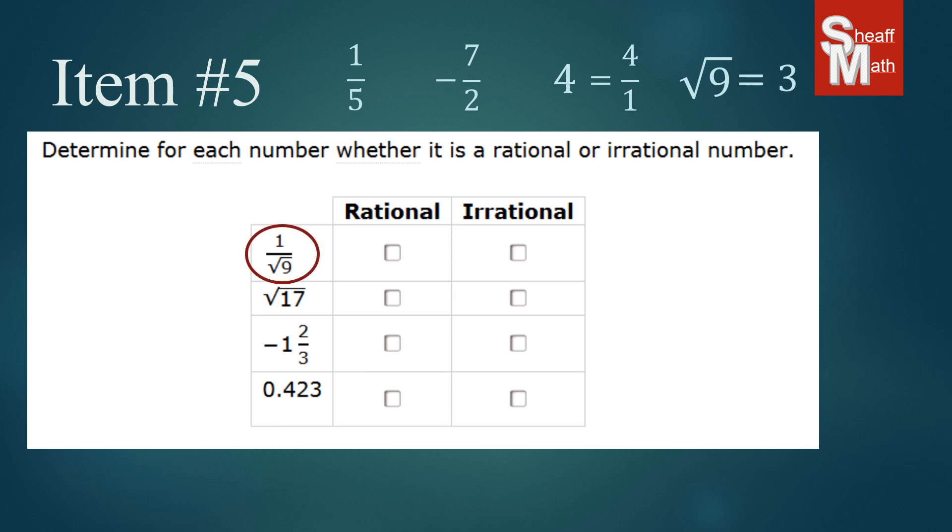So let's take a look at the first one, one over square root of nine. Now the square root of nine, as we just said, was three. So we can represent this as one over three. That is a good fraction. Therefore, this is rational.